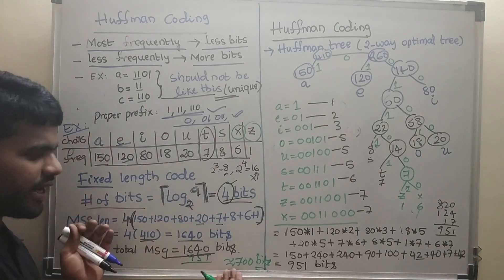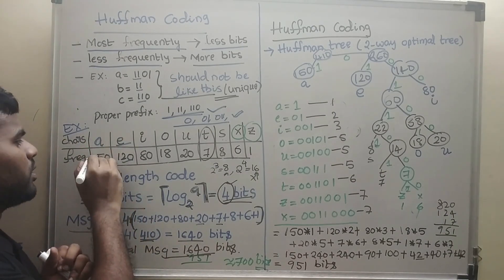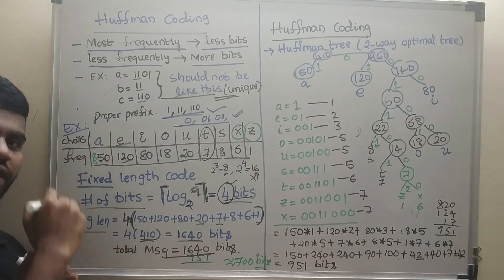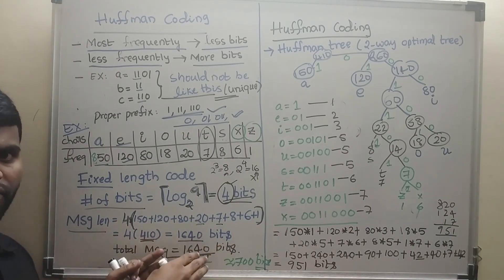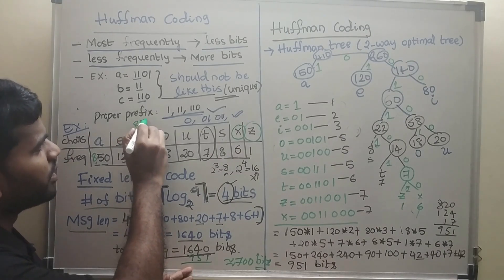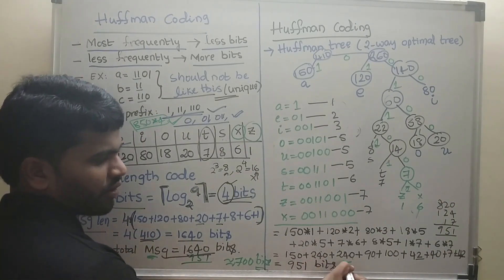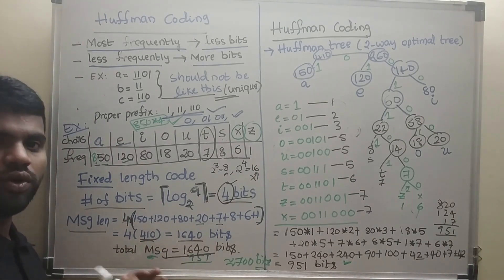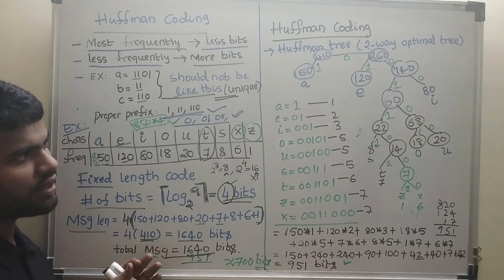For only this small message you are getting this much difference. If the message is very large — say 850 or more occurrences — the savings go even further, into 4K or 5K bits. A frequently occurring character represented in only 1 bit versus 4 bits is the best case. We will discuss more problems in Huffman coding, which are asked in GATE. This is a very simple topic and you can get 2 to 3 marks in GATE, so please concentrate on this.